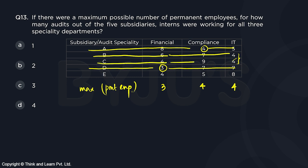Since four exists in both compliance and IT, it takes care of both subsidiaries. It is only subsidiary E that is left over where only interns are working. Out of four members, three are permanent so one is an intern; out of five, four are permanent so one is an intern; out of eight, four are permanent so four are interns. There is only one subsidiary where interns work all three specialities, so the answer is option A.